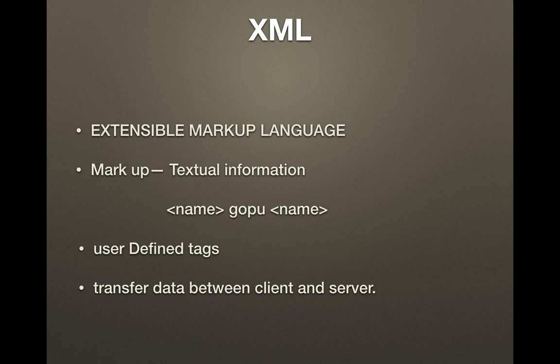XML is a markup language — it is not a scripting language. In markup languages we use tags. In XML the tags are user-defined, unlike HTML where tags are predefined. For example, in HTML the table tag is predefined and the browser understands it. In XML you can create your own tag names — for example, if you want a tag for your name, you can define it yourself.